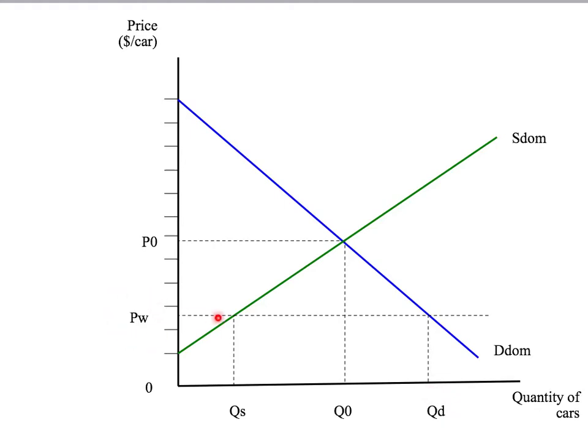Producers at this lower price, however, will only want to sell QS cars. They'll be wanting to sell less cars than before. How is the difference made up? The gap between the amount of cars that Australia wants to buy and the amount of cars that Australia wants to sell? Well, that gap is simply going to be the amount of cars that Australia imports.